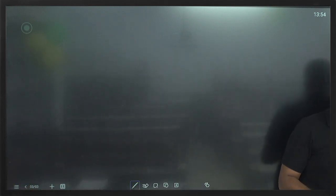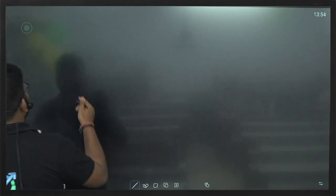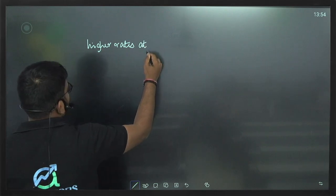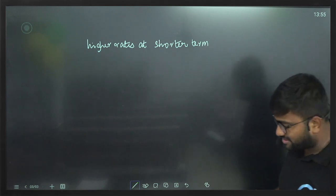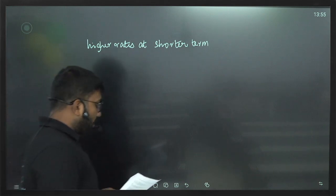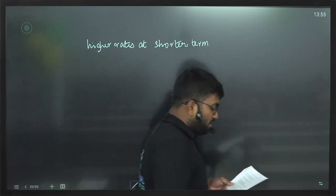What is the meaning of an inverted yield curve? An inverted yield curve is when rates are higher at the shorter term — the curve is downward sloping, meaning higher rates at shorter term. Why is an inverted yield curve unusual? Usually the yield curve increases with maturity, reflecting uncertainty about future rates and as compensation for investing money for a longer time.